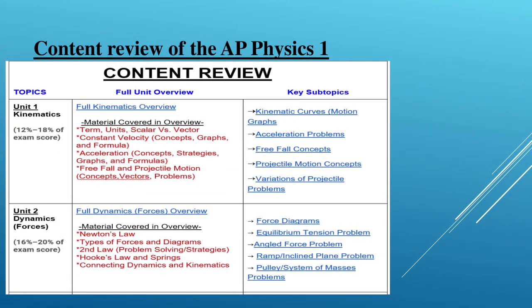Let's talk about the content review of the AP Physics 1. In Unit 1, we have the kinematics and its weight is 12% to 18% of exam score. The material covered in the overview will be in term units, scalar versus vector, constant velocity, acceleration, freefall and projectile motion. In Unit 2, we have the dynamics, forces. The weight is 16% to 20%. The material that is covered in the overview is Newton's laws, types of forces and diagrams, second law, Hooke's law and springs connecting dynamics and kinematics.